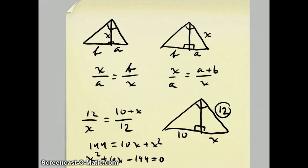This is actually an unusual factoring. If you have trouble factoring you could use the quadratic formula. But 18 times 8 is 144. So x plus 18, x minus 8 equals 0.